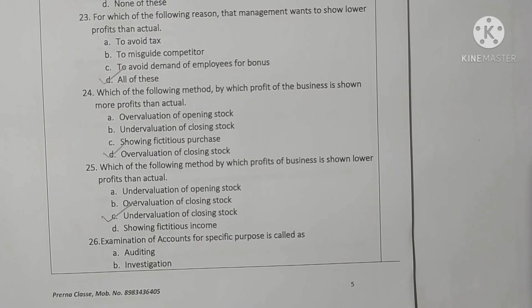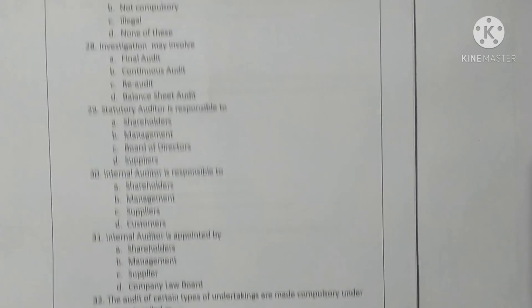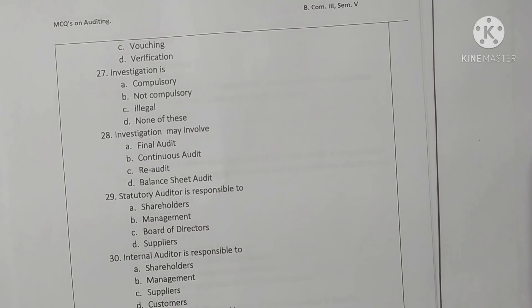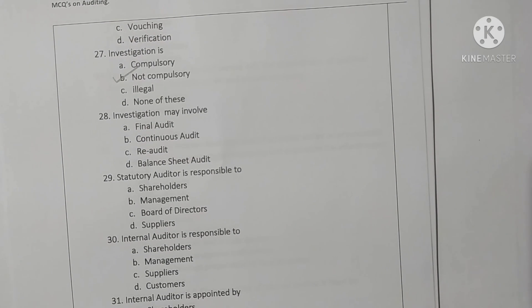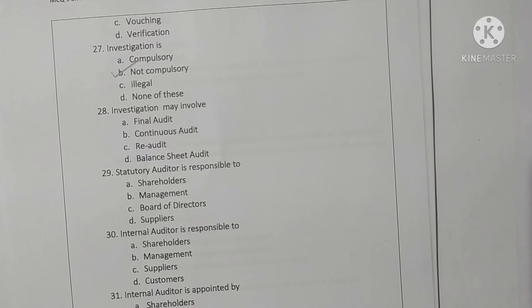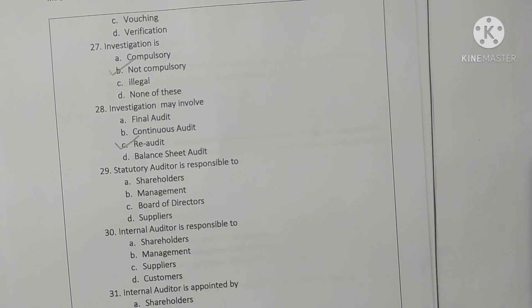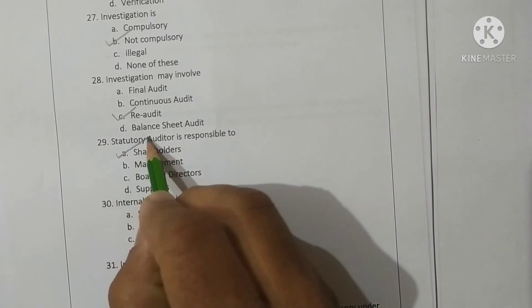Examination of accounts for a specific purpose is called an investigation — option B is correct. Investigation is not compulsory — option B is correct. Investigation may involve re-audit — option C is correct. Statutory audit is responsible to shareholders — option A is correct.